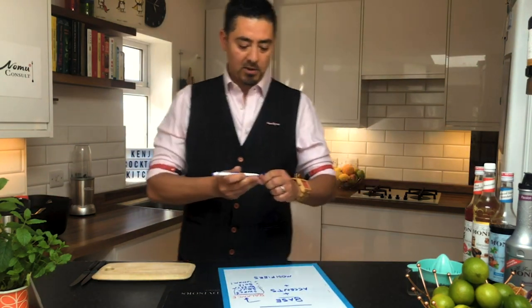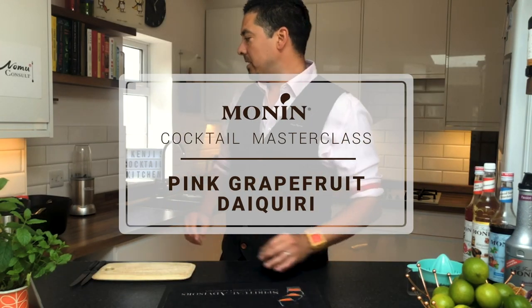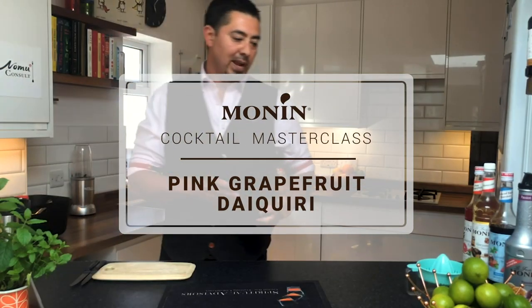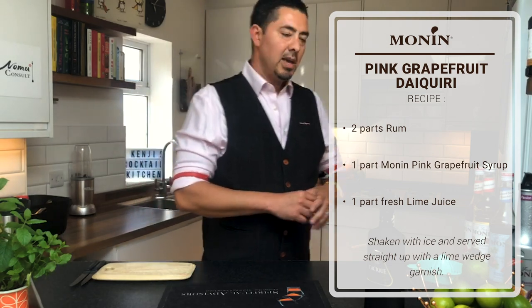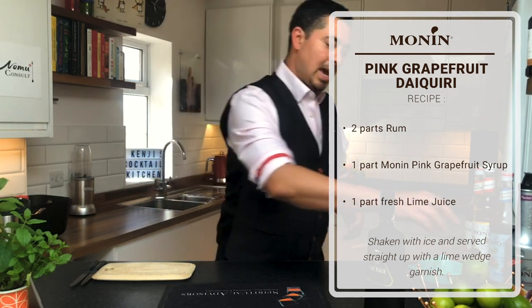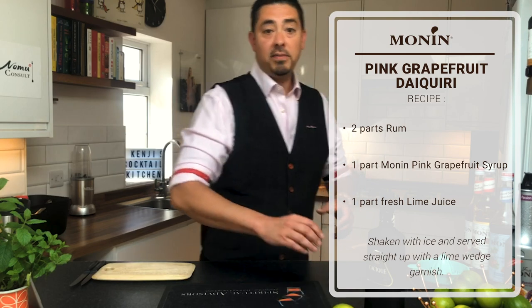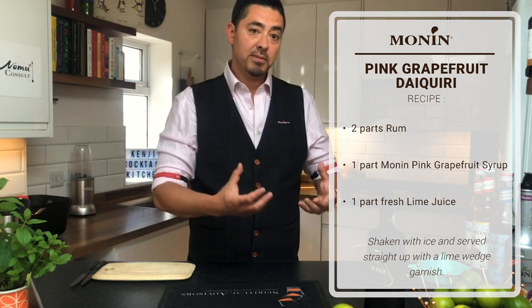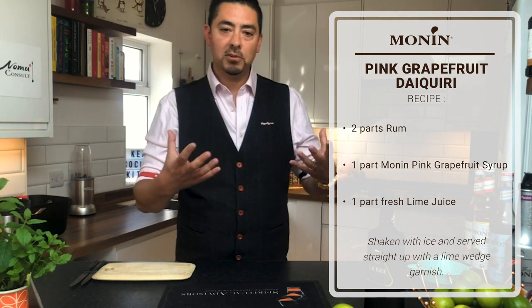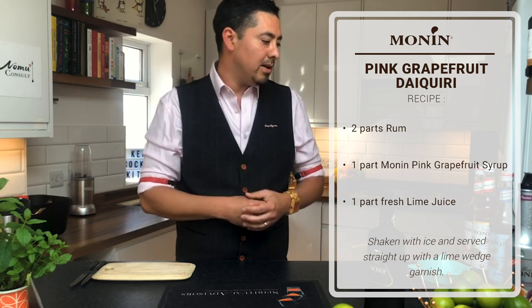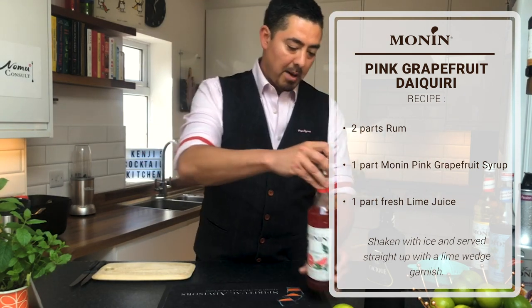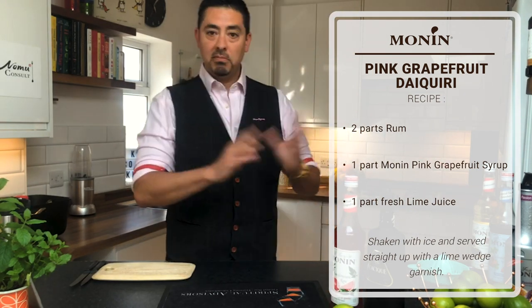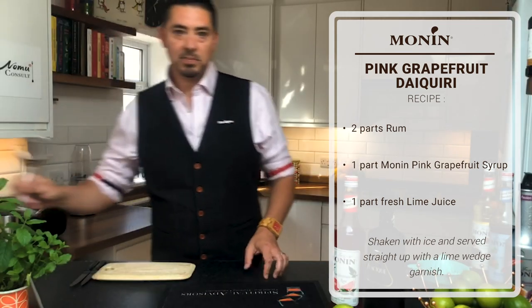We're going to create this family of cocktails that just use those three ingredients. Starting with the daiquiri, you need three elements: a rum — I'm using a Cassique, a Venezuelan rum. For the sour I'm going to use a lime; if you haven't got limes you can use lemons or grapefruits, though it does change the flavor. And as a nod to the Hemingway daiquiri I'm going to use Monin's pink grapefruit syrup. Just those three ingredients to make the daiquiri.